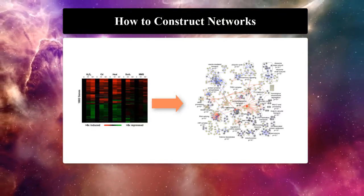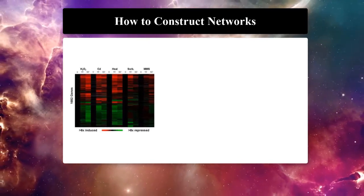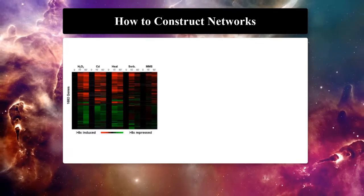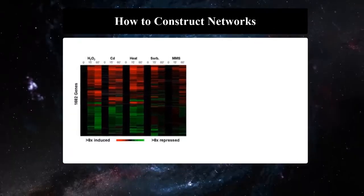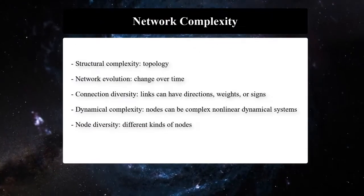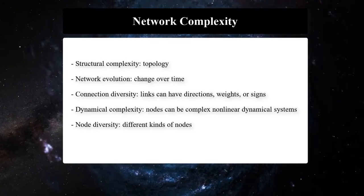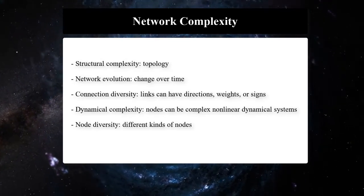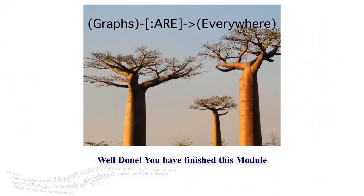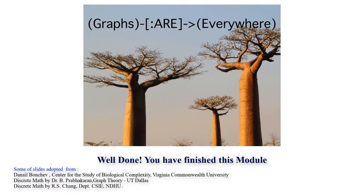Most of these methods use perturbation to validate the reconstructed network. This can be performed by removing a node, gene, protein, or metabolite from a system, or by preventing interaction among particular ones. Biological networks are very complex and diverse, so we cannot analyze them only by relying on statistical-based methods. In the remaining part of this course, you will learn about new ways of studying and exploring such complex networks.